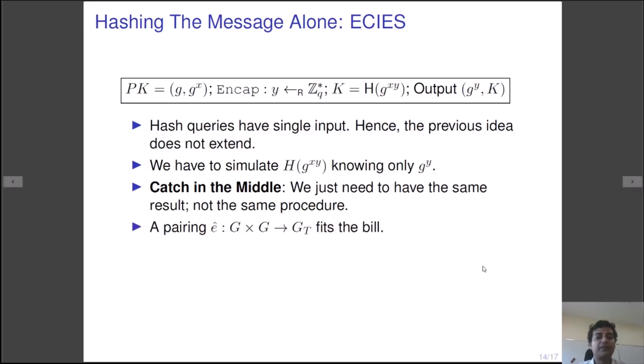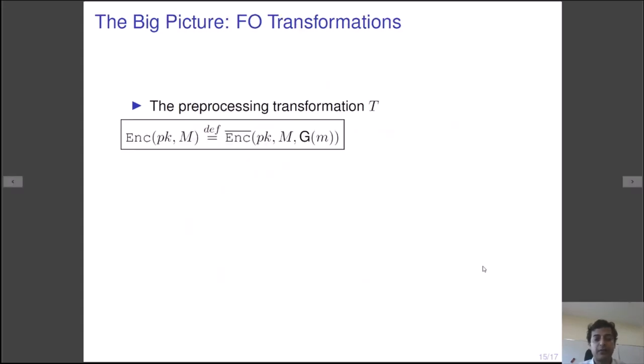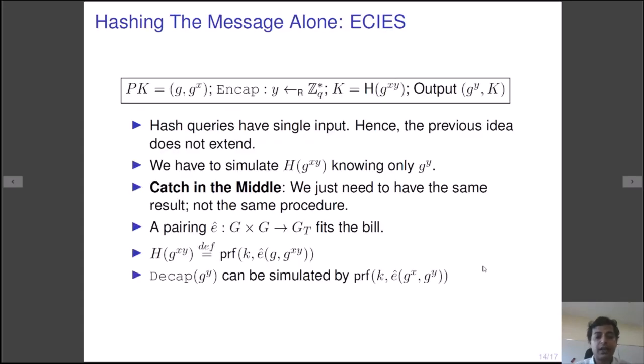For this, a pairing fits the bill perfectly. We simulate h of g to the power xy by evaluating the PRF on e of g, g to the power xy. And during the decapsulation simulation, the reduction can retrieve the same value from evaluating e on g to the power x and g to the power y. This way we can make the ECIES reduction memory tight when the group admits pairing.